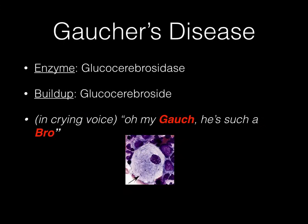Gaucher's disease: the deficient enzyme is glucocerebrosidase, and the accumulating substrate is glucocerebroside. The mnemonic — said in a crying voice — is: 'Oh my gosh, he's such a bro.' Gaucher is Gaucher's disease, and bro clues you into glucocerebrosidase. You say it in a crying voice because of the special histology associated with this disease: a tissue paper cytoplasm. Think of tissue paper you use to wipe away tears.